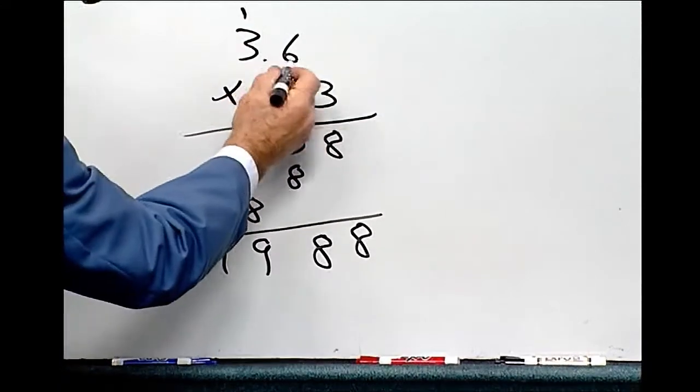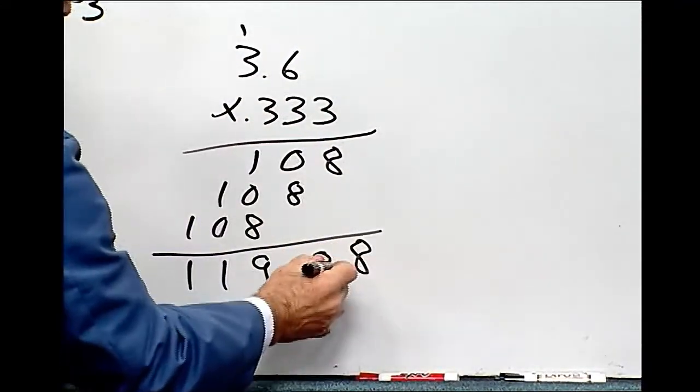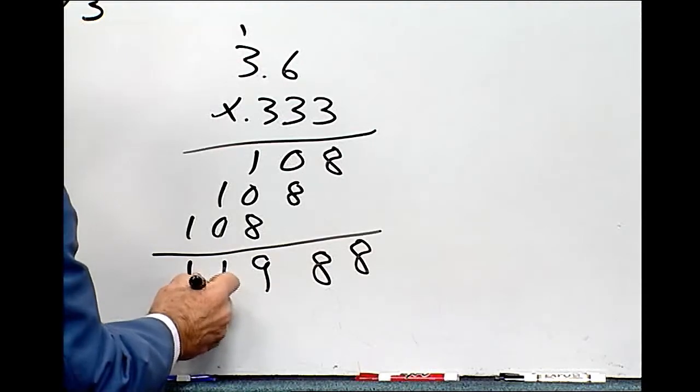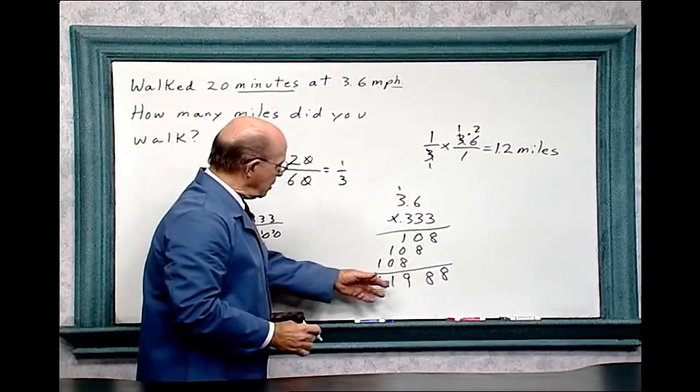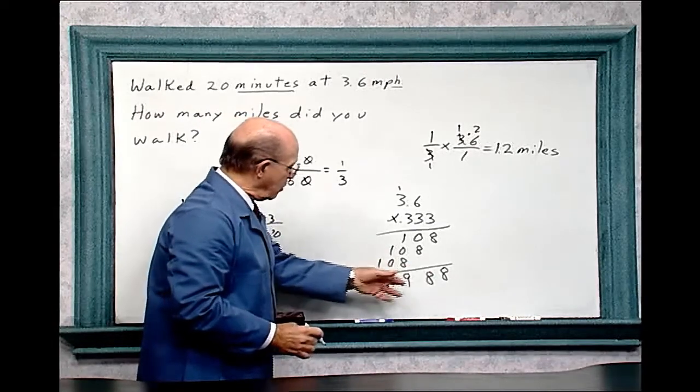Let's add the numbers together. We've got 1, 2, 3, 4 decimal places. So this would be 0.1, 1, 9, 8, 8, or 1.2.